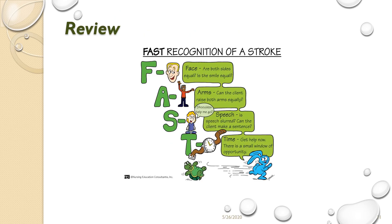We want patients and families to know the FAST mnemonic and the importance of fast recognition. Face: are both sides equal? Is the smile equal? Arms: can the client raise both arms equally? Speech: is it slurred, or can the client form an understandable sentence? Time: note the time of symptom onset and call 911 — get help as soon as possible.